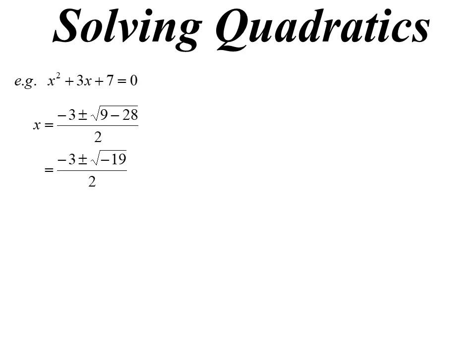We can now find solutions because the square root of minus 19 can be simplified — we know the square root of negative 1 is i. So we simplify and there's our answer: minus 3 plus or minus the square root of 19 times i, all over 2.